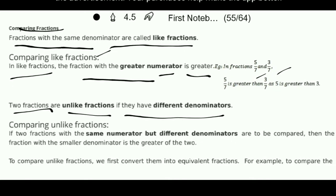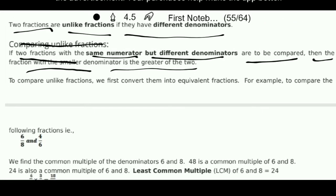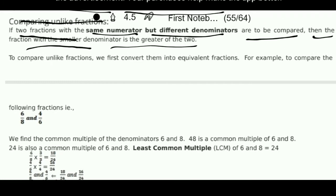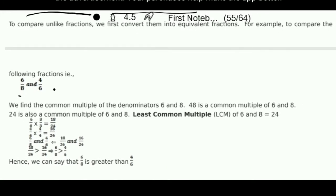Now the next topic is Comparing Unlike Fractions. Unlike Fractions means we are having different denominators. If two fractions with the same numerator but different denominators are to be compared, then the fraction with the smaller denominator is greater. For example, 6 upon 8 and 4 upon 6 — we can find the LCM of the denominators 8 and 6.